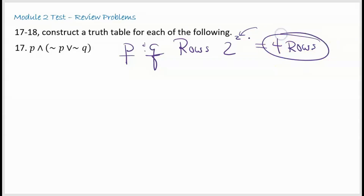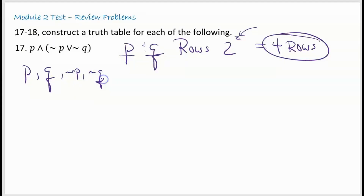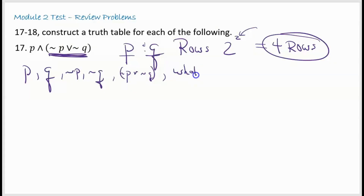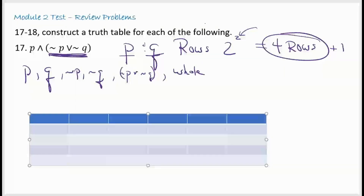So when you create this, you're going to need four rows — really five, because I'm going to build a header row. For columns: you need a column for P, a column for Q, and also a not P and not Q column. Then you need your parentheses statement — not P or not Q — and then finally the whole statement. So I need five rows and six columns. Magically, I've put a table here with five rows and six columns.